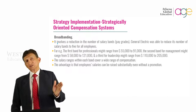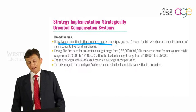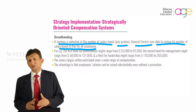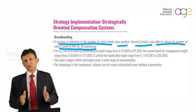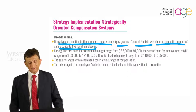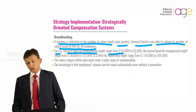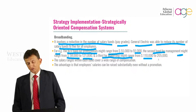Another important aspect is broadbanding, which involves a reduction in the number of salary bands or pay grades. General Electric, one of the largest MNCs, was able to reduce its number of salary bands to just five for all employees. Some companies have a large number of bands, but even a big company like GE wants them restricted for ease of use and understanding. For example, the first band for professionals might range from $55,000 to $91,000, the second band for management from $58,000 to $121,000, and the third for leadership from $110,000 to $205,000.